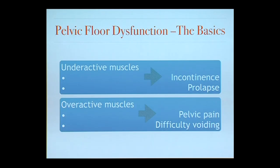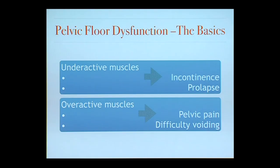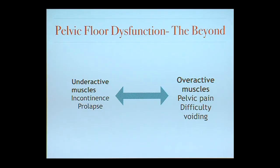The basics are that we're dealing with either underactive muscles — not working well, loose, needing to get stronger, typically presenting with incontinence or pelvic organ prolapse — or overactive muscles that are too tight, typically associated with pelvic pain and difficulty voiding. However, beyond that, we do see overactive muscles in incontinence and underactive muscles in pelvic pain, so it's more complex, and you really do need to get evaluated for someone to figure this out.